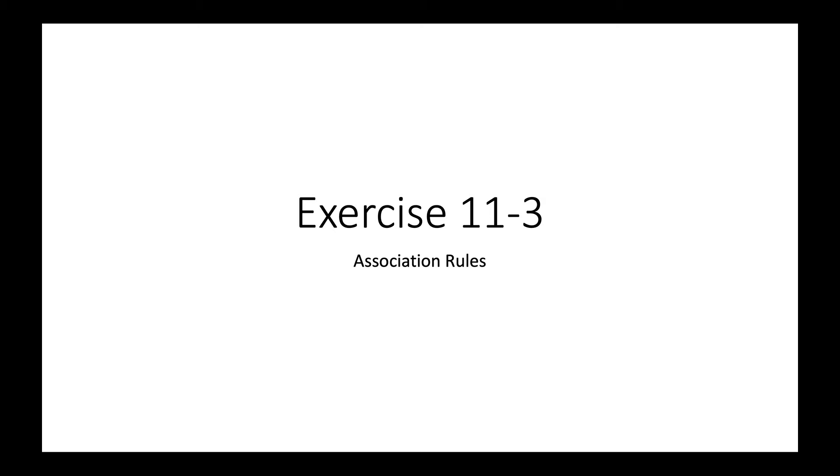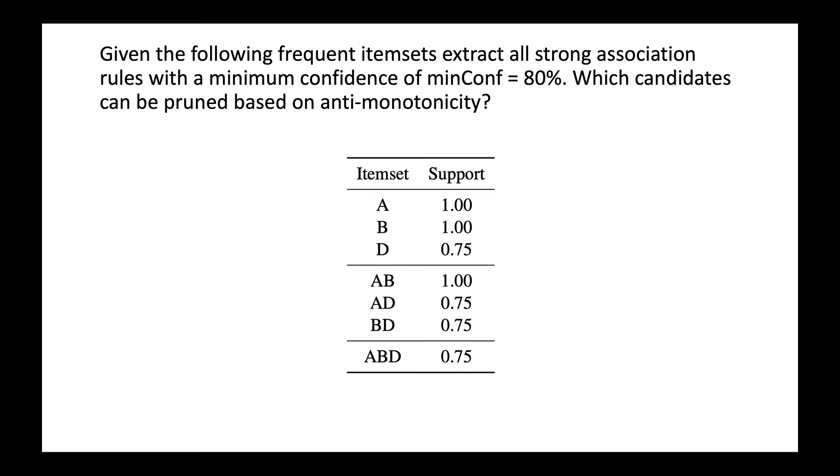So here we have the last exercise of the semester and of this lecture on association rules. We're given the following question. We have frequent itemsets and we're given the support of the itemsets, and we're trying to extract strong association rules with a minimum confidence of 80%. And we're also asked which candidates can be pruned based on anti-monotonicity.